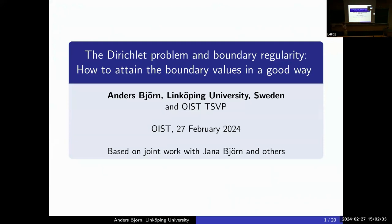I want to look at the Dirichlet problem and boundary regularity. I would say that potential theory even started earlier with people like Newton, Gauss, and Dirichlet, who were way before Wiener. But it really took a different turn after Wiener's criterion. The subtitle today is: how to attain the boundary values in a good way.